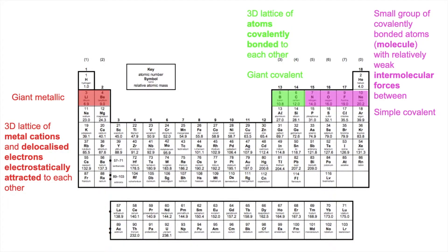Moving on to period 3, the first three elements have giant metallic structures. Silicon has the giant covalent structure, and the remaining four have simple covalent structures.